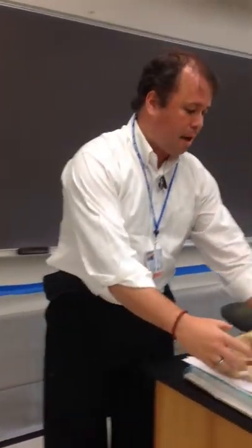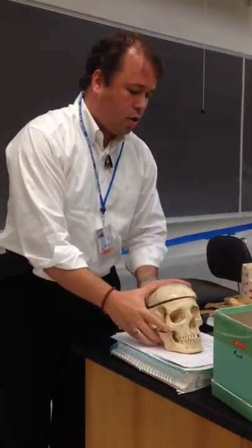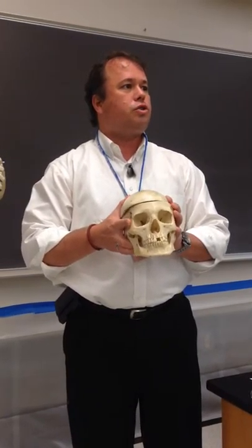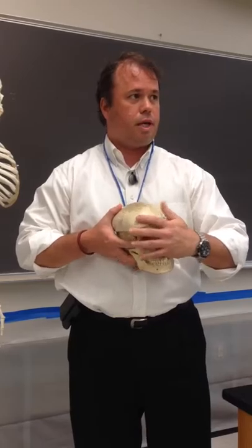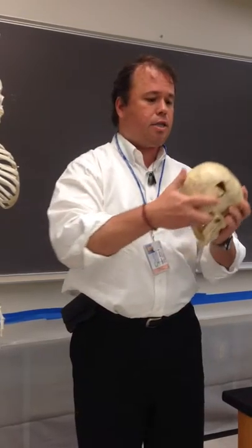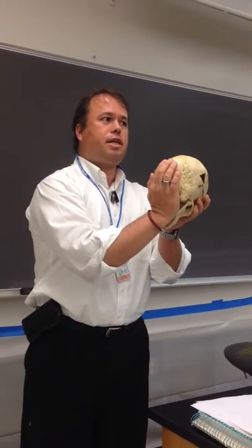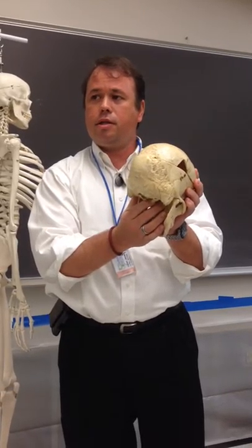When we talk about the skull, you already know two of the bones of the skull. The forehead is called the frontal bone. The base of the skull is called the occiput, or the occipital bone.